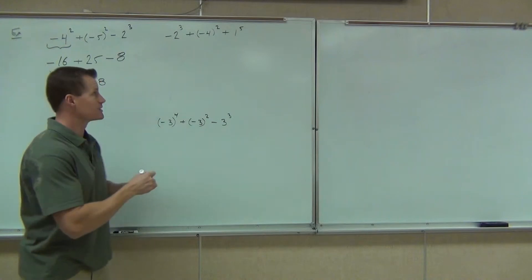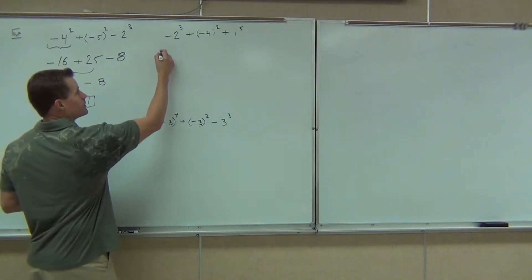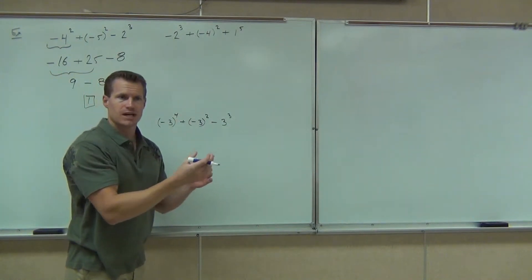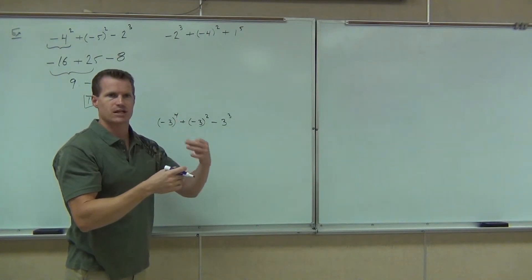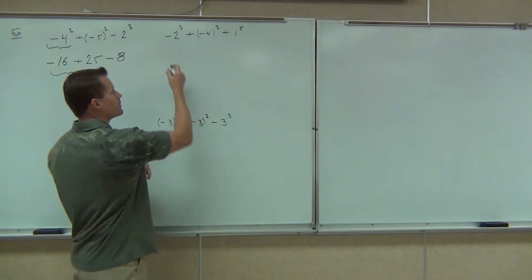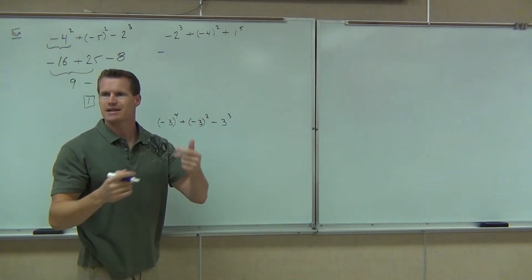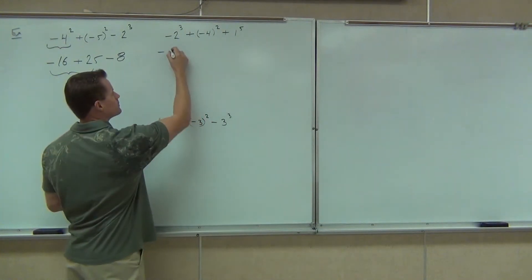So what this does not mean is negative 2 times negative 2 times negative 2. What it does mean is negative 2 times 2 times 2. That's the difference. Are you seeing the difference there, folks? So this is — even though you would get the same answer in this case, I need you to understand the process. This is negative, and then you go 2 times 2 times 2. So that's negative 8.